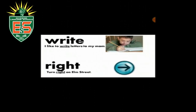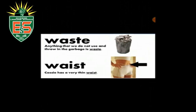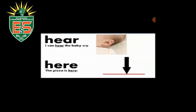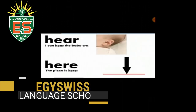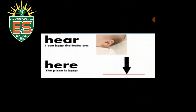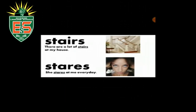'Right' — I like to write letters to my mom. 'Right' — turn right on Elm Street. 'Waste' — anything that we don't use and throw in the garbage is waste. 'Waist' — Casey has a very thin waist. 'Hear' — I can't hear the baby cry. 'Here' — the pizza's here.